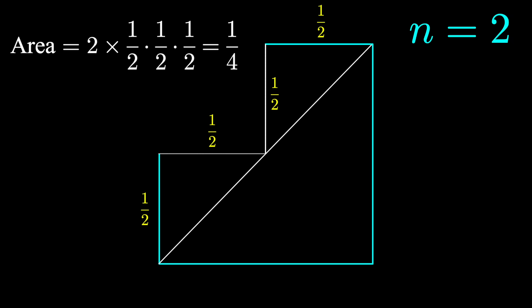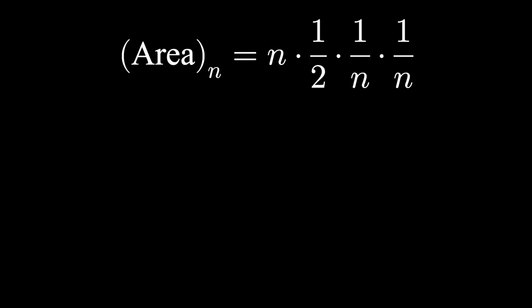So, for a general n times 1 half times 1 over n times 1 over n, we have n triangles, each with area 1 half base times height.